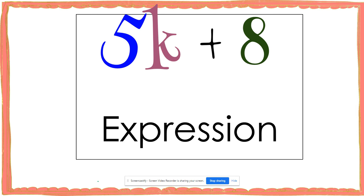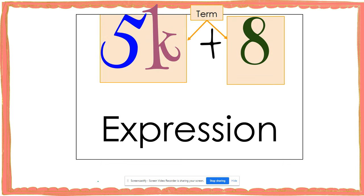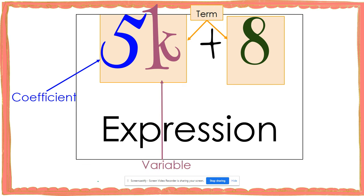So in this case, 5k would be a term and 8 would also be a term. In the problem 5k plus 8, we notice that we have 5. 5 is called a coefficient and k is called a variable. A coefficient can be recognized because a coefficient is the number that is being multiplied by the variable in your expression.